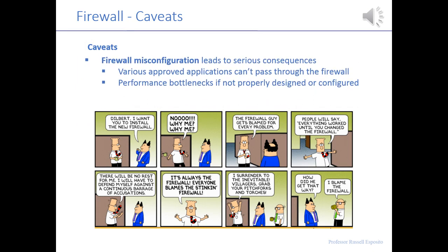I put a Dilbert cartoon in here for a little levity. Firewall misconfigurations can often cause problems — stopping various approved applications from passing through the firewall and creating performance bottlenecks. Dilbert is very reluctant about installing the next firewall, because whenever there's a problem in most companies, the first place they look is the network or the firewall changes: has anyone changed the firewall?